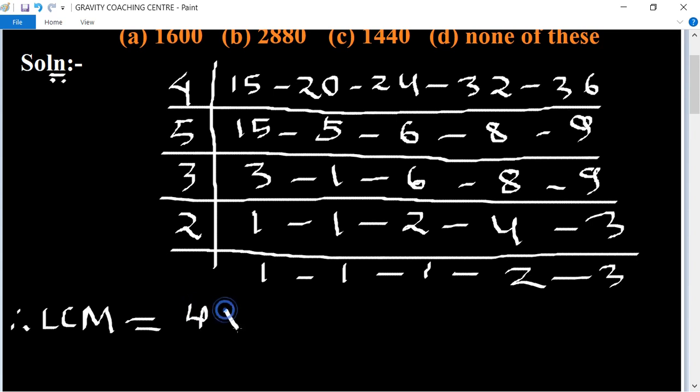4 into 5 into 3 into 2 into 2 into 3 equal to 1440. It's the answer.